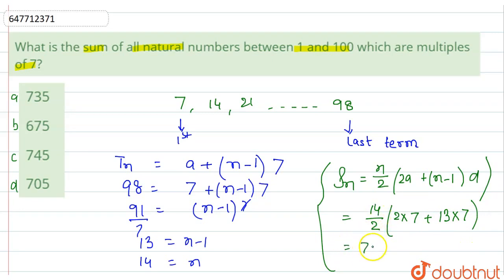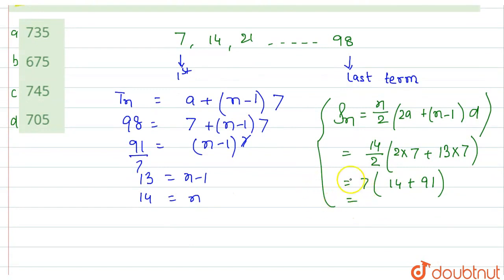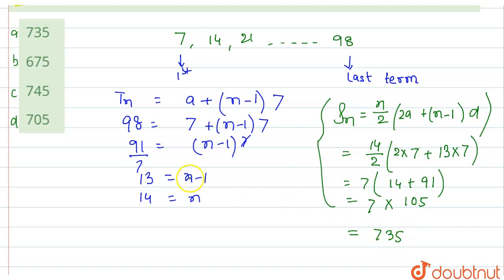तो 14/2 × (2×7 + 13×7) = 7 × (14 + 91) = 7 × 105. तो जब आप इसे calculate करेंगे, तो ये 735 आएगा. तो option A, 735, ये हमारा right answer है.